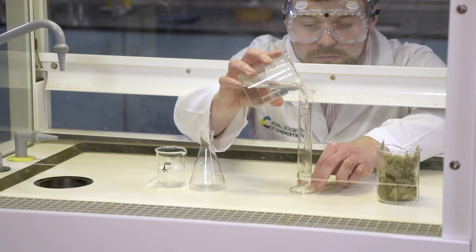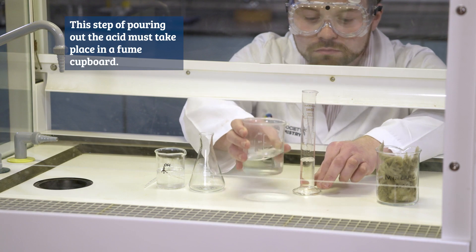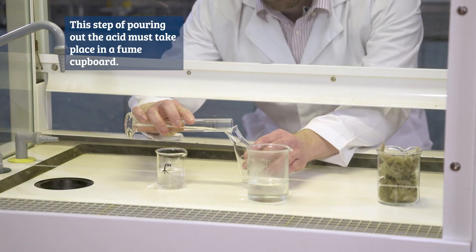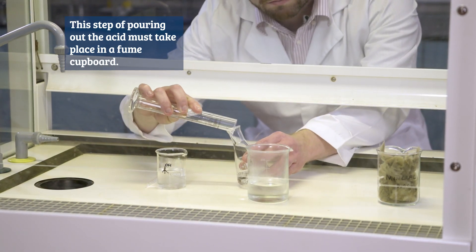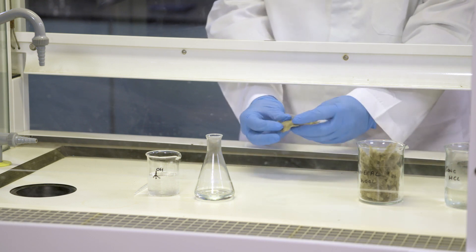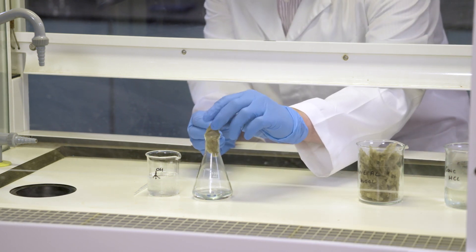I'm going to start by measuring out 20 centimeters cubed of concentrated hydrochloric acid and pouring it into a conical flask. Use mineral wool to plug the neck of the flask. You can also use cotton wool for this.